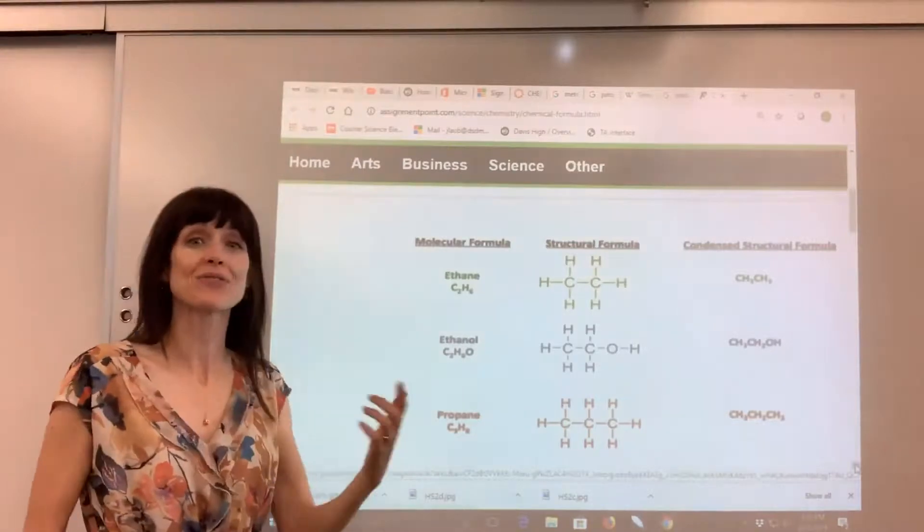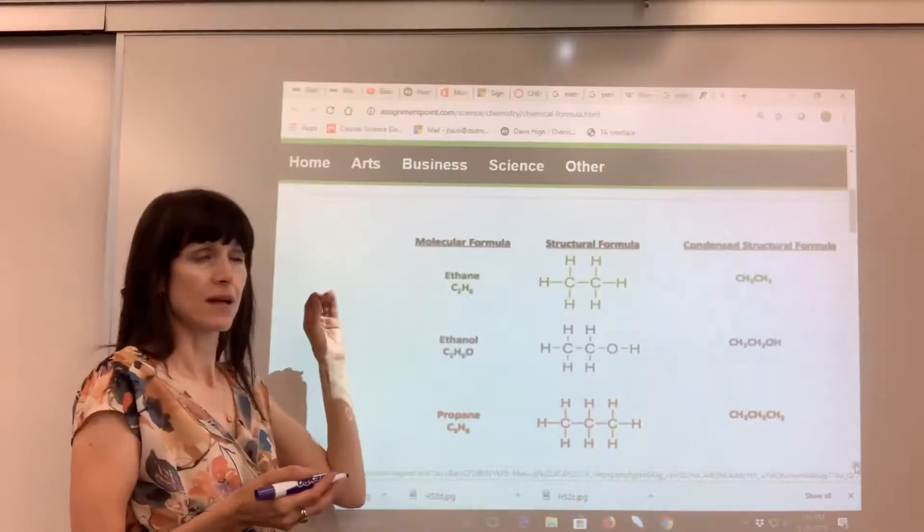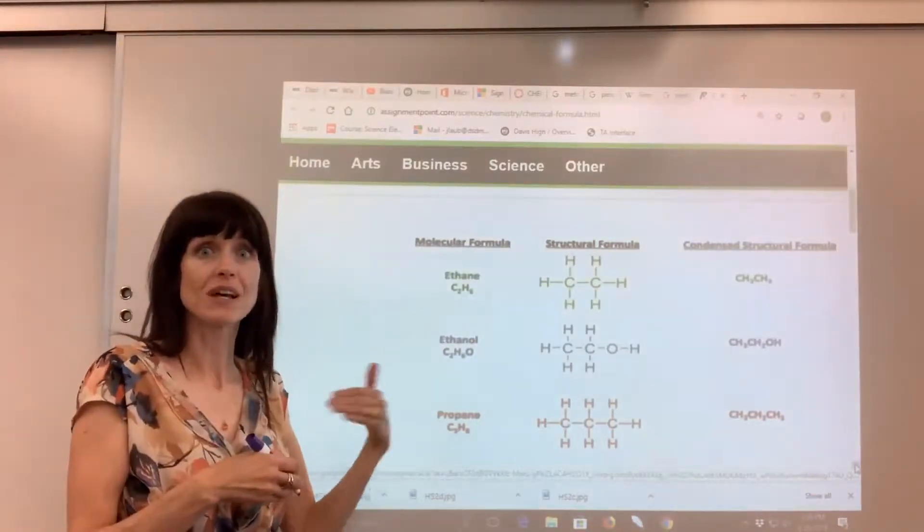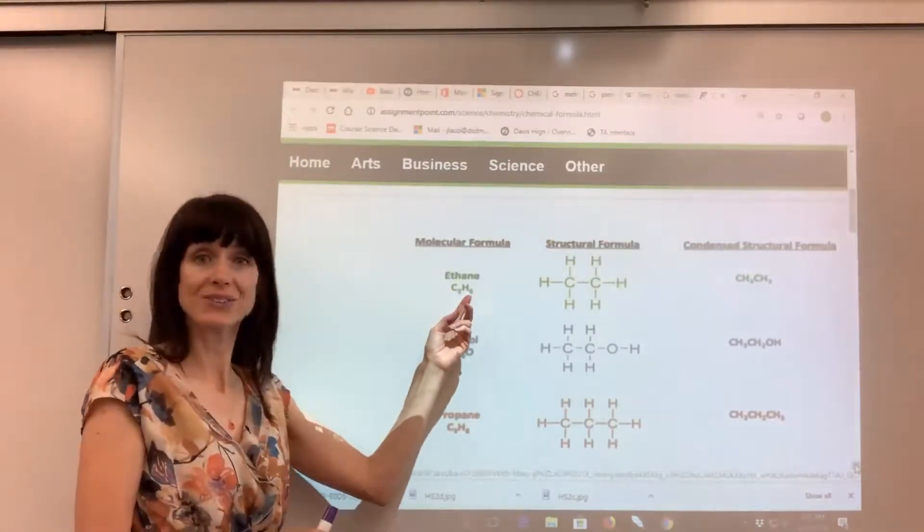Here we have a molecular formula. This is when we write the number of atoms with the subscript indicating how many we have of each atom. So notice on ethane there's two carbons and six hydrogens.